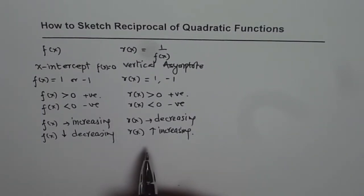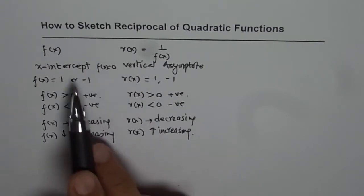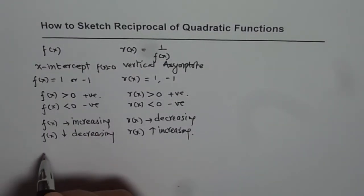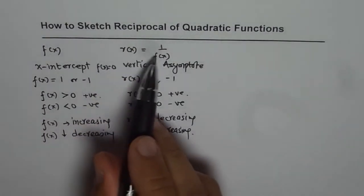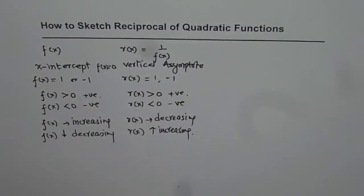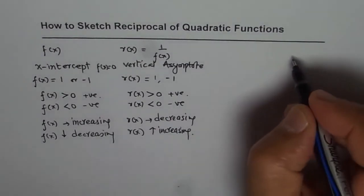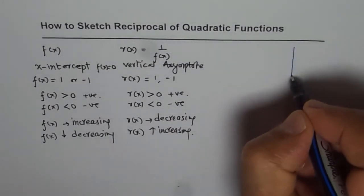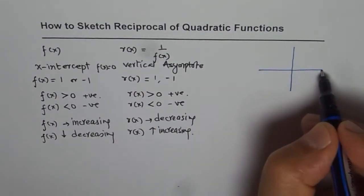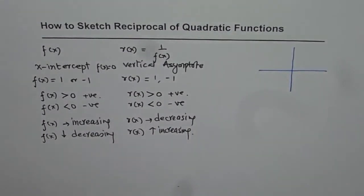One more important thing is the behavior near the x-intercept — how does the reciprocal function behave there? We will explore this with reference to quadratic functions. Now let us consider quadratic functions one by one, since we can write quadratic functions with different characteristics.